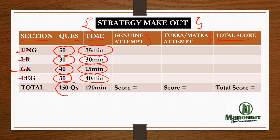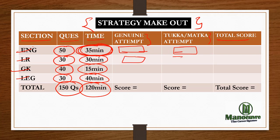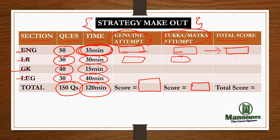Overall, there are 150 questions which you have to finish in 120 minutes. In each section, note your attempt — meaning your genuine attempt and your 'Tukka' (guess) attempt — and write it down in this chart. This will help you to understand how much you know: whatever you mark genuinely and whatever you guess. It will help you understand your score with respect to all sections and your final score.